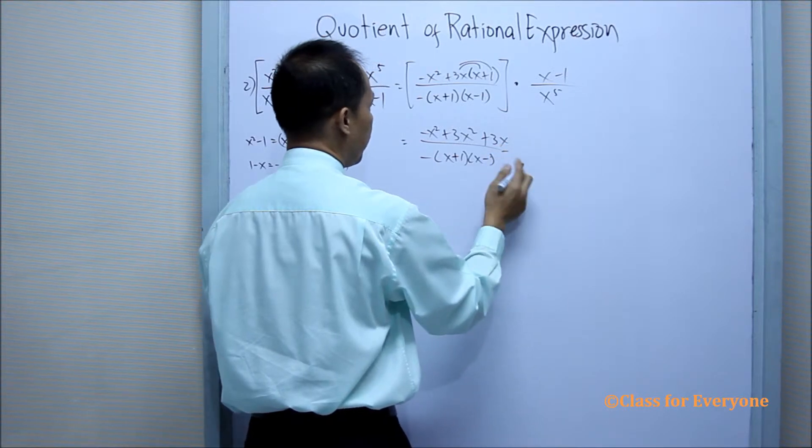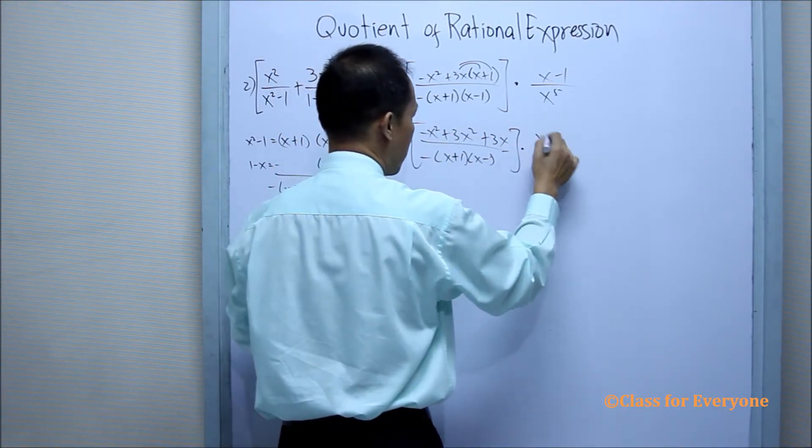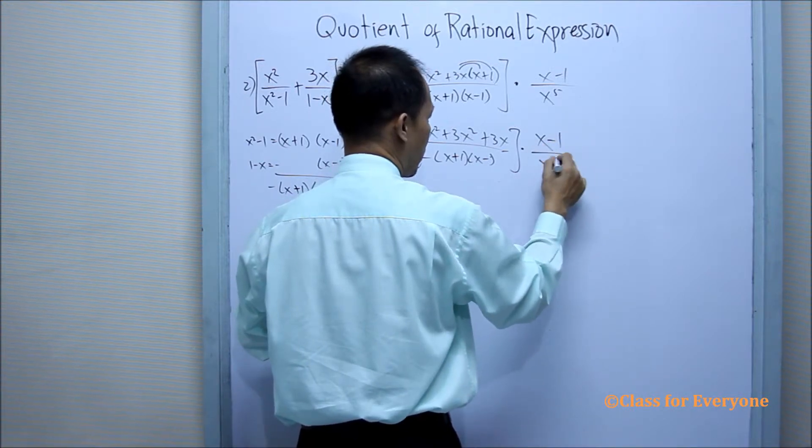And then times, copy x minus 1 over x to the fifth.